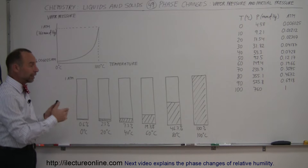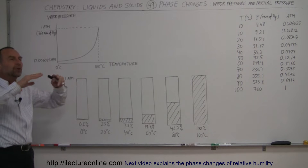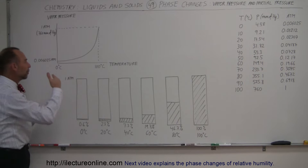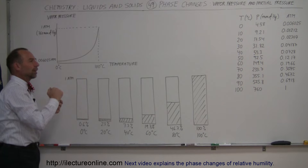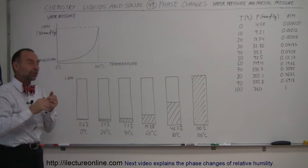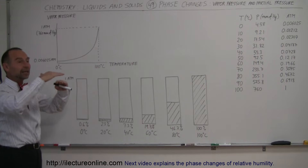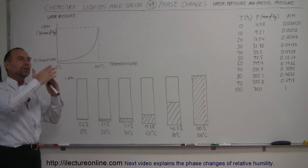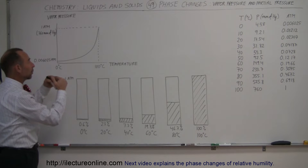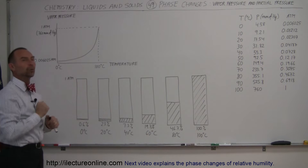Whenever water is at a higher and higher temperature, the rate of evaporation will increase, and if you put that into an enclosed container, the vapor pressure will build up to that maximum pressure that can exist at that temperature. At that point we'll reach a dynamic equilibrium where the rate of evaporation will equalize the rate of condensation, and that will be the pressure maintained for the water vapor above the water.